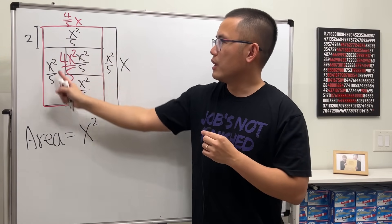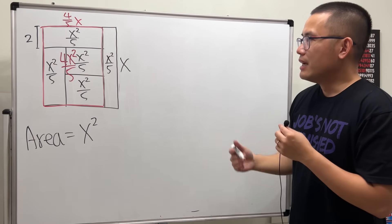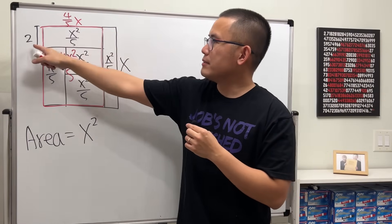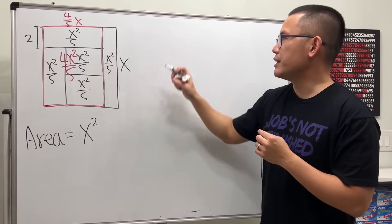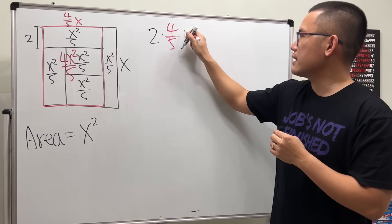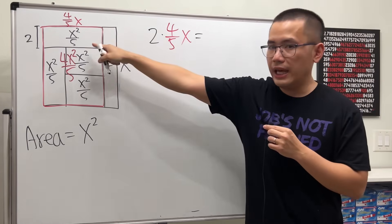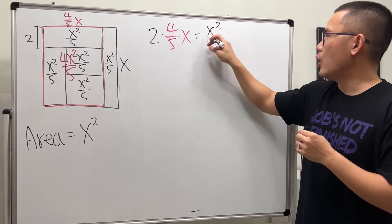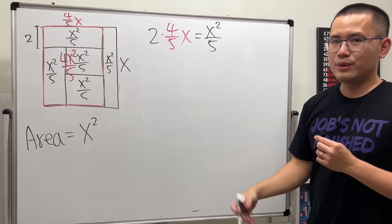And now we have this times that must be equal to this, so we can set an equation. 2 times 4 over 5x must be equal to x squared over 5, and now we can just work this out.